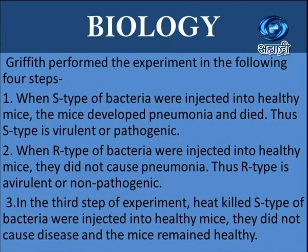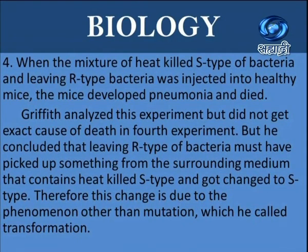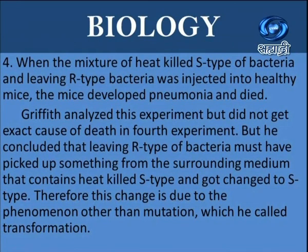In step four, when a mixture of heat-killed S-type bacteria and living R-type bacteria were injected into healthy mice, the mice developed pneumonia and died. Griffith analyzed this experiment but did not get the exact cause of death in the fourth experiment. He concluded that the living R-type bacteria must have picked up something from the surrounding medium containing heat-killed S-type and got changed to S-type. Therefore, this change is due to the phenomenon other than mutation, which he called transformation.